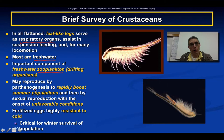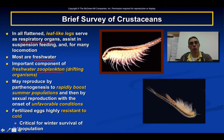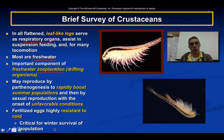Branchiopods reproduce by parthenogenesis — reproduction without the necessity of having a partner. The offspring are typically entirely female, since females produce the young. One reason these animals reproduce this way is to rapidly boost the population when conditions are favorable, typically in spring and summer. When conditions become unfavorable, such as in fall or winter, they produce a few males that mate with females, producing fertilized eggs that are highly resistant to cold — critical for winter survival of the population.